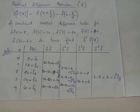The central difference operator is notated using the symbol delta. Delta f of x equals f of x plus h by 2 minus f of x minus h by 2, where h is the interval of differencing.